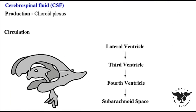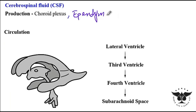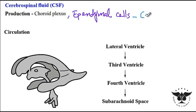Cerebrospinal fluid is produced by the choroid plexus — more specifically, it is the ependymal cells of the choroid plexus that produce the cerebrospinal fluid. These cells are dependent on an active transport system that uses the enzyme carbonic anhydrase.